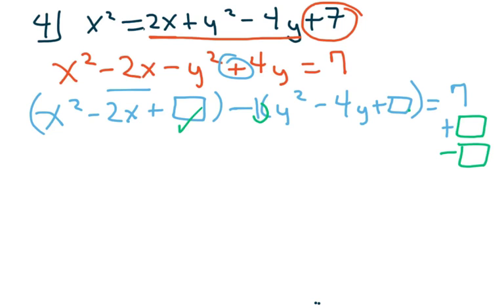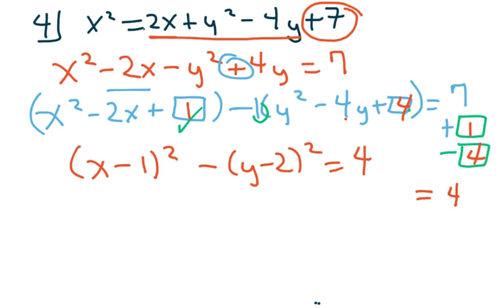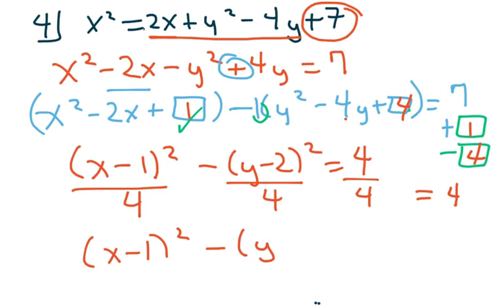Alright, so half of two is one, square at one, that goes in that one. And this one, half of four is two squared and you get four. Alright, so when you add all this up, we get eight minus four and you get four. So I'm going to put this together. X minus one squared minus Y minus two squared equals four. It's definitely not a circle, so a circle would have a plus there. So if I divide everything by four I get X minus one squared over four minus Y minus two squared over four equals one.